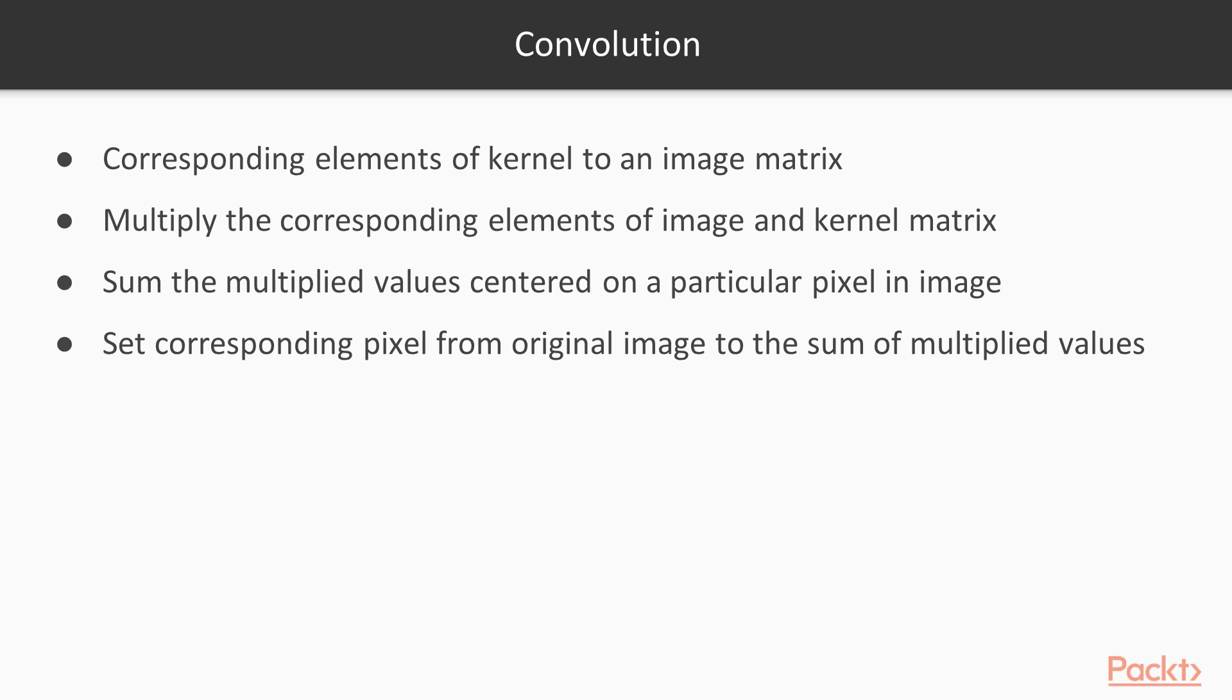In a new empty image, set the corresponding pixel from the original image to the sum of multiplied values. Now perform this operation for all the pixels in the original image. This is image convolution.